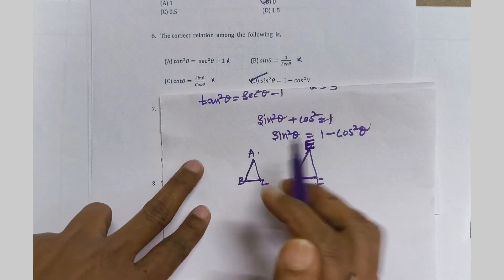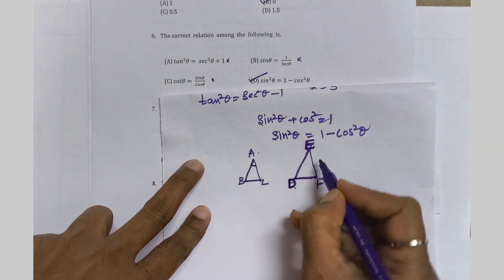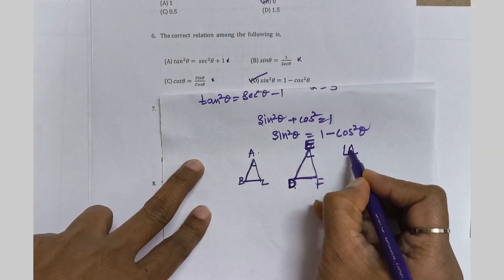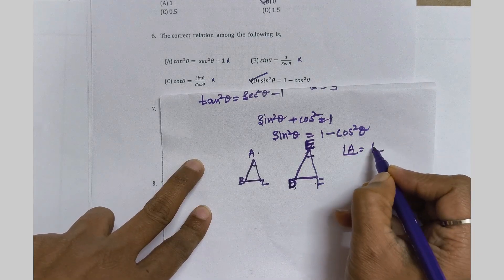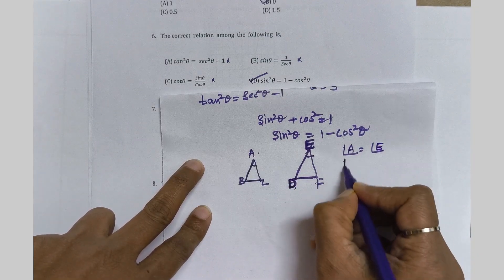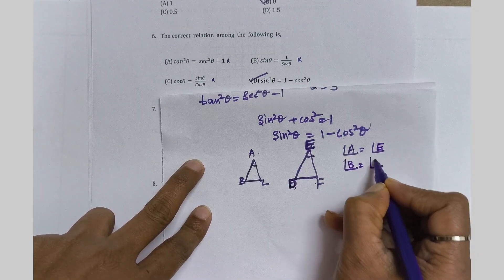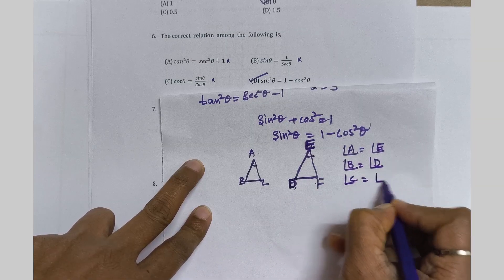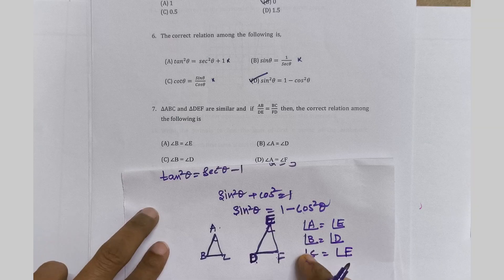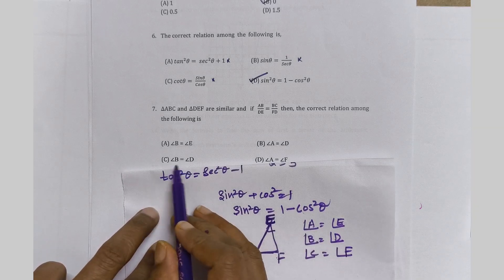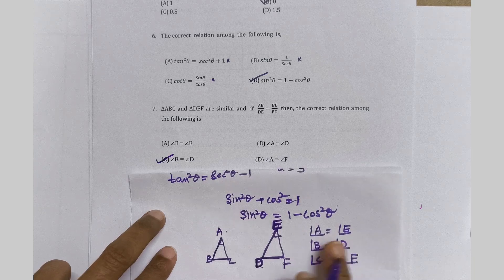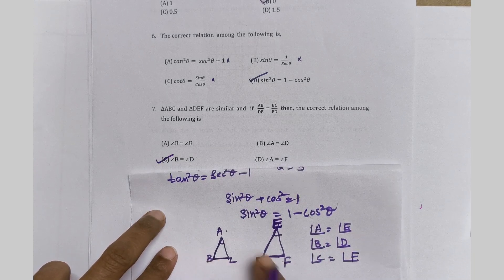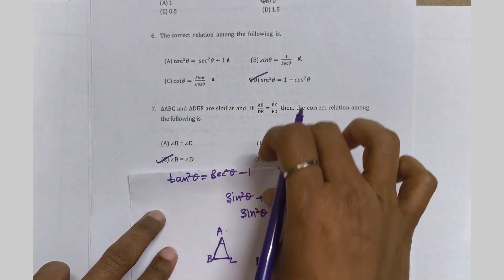Among the given options, angle B = angle D is listed in option C. So option C is the correct answer — angle B is equal to angle D.